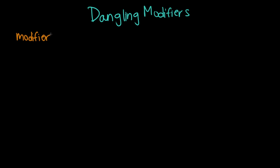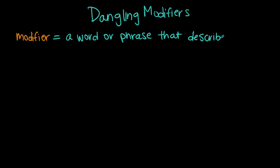Rosie, do you want to tell us the definition of a modifier is? Sure, so one major modifier that you think of is an adjective, so a lot of times a modifier is describing something else in the sentence. Right, so it can be an adjective or like a phrase, or an adverb too. So a modifier is always supposed to come right before the word or phrase that it's modifying. But when it doesn't do that, that's what's called a dangling modifier.